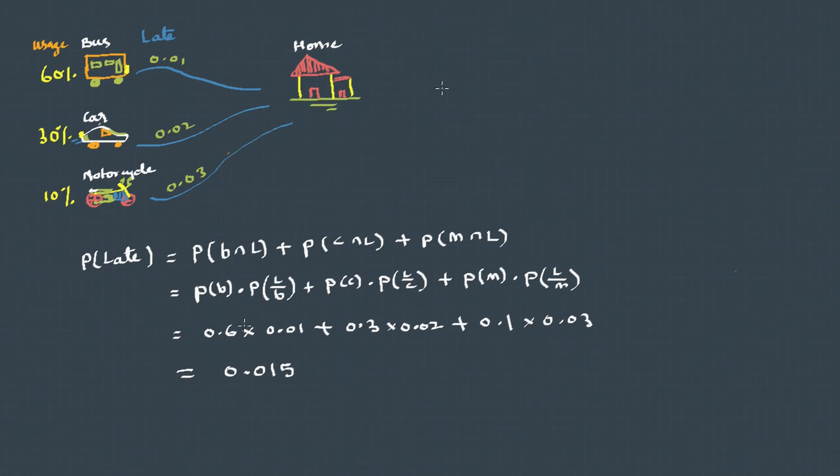Now, what if the question is something like this: you are late, and what is the probability that you have taken the bus? That's probability of choosing bus given that you are already late, and this can be solved using Bayes' theorem.